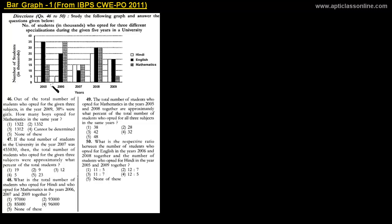For the year 2005, the number of Hindi students is 5,000, the number of English students is 35,000, and the number of Mathematics students is 15,000. Similarly, figures are available for 2006, 2007, 2008, and 2009. Once you have understood this bar graph, you can go ahead with the examples.